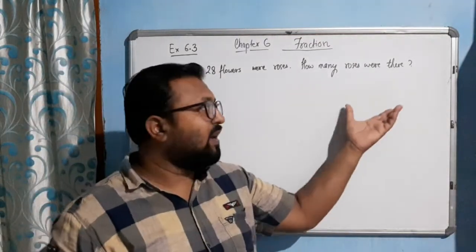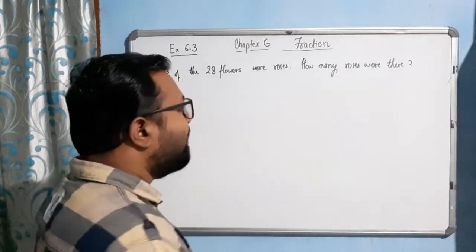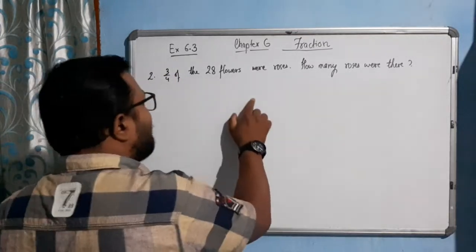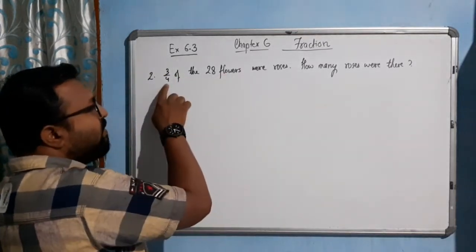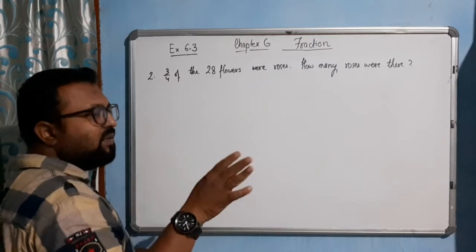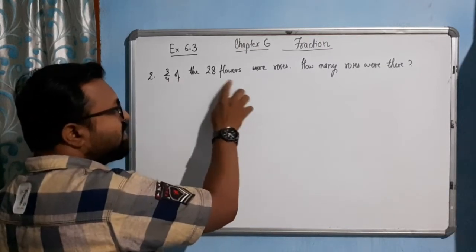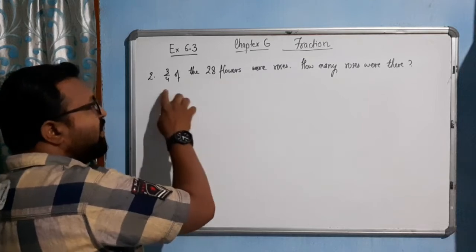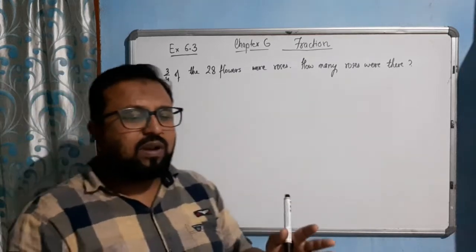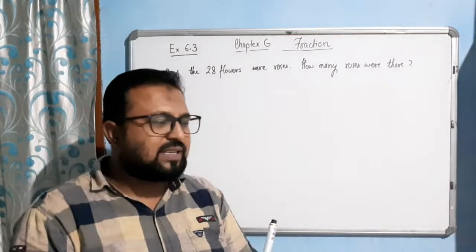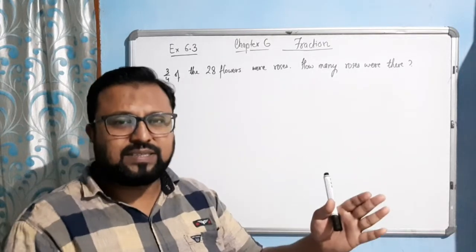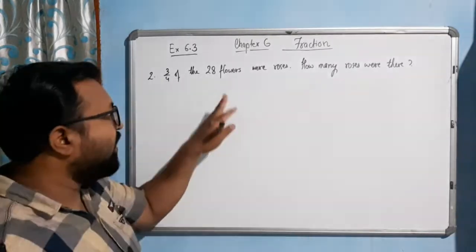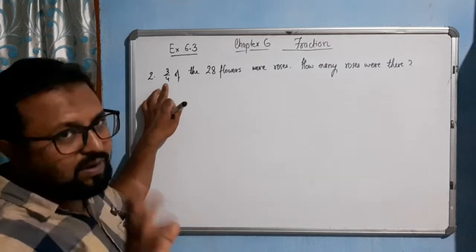First let me explain you diagrammatically. Now twenty-eight flowers we have to divide in four equal parts. Again I want to say that twenty-eight flowers we will pack in four equal vases or you can say packets. We will try to distribute equally twenty-eight flowers in four equal packets.